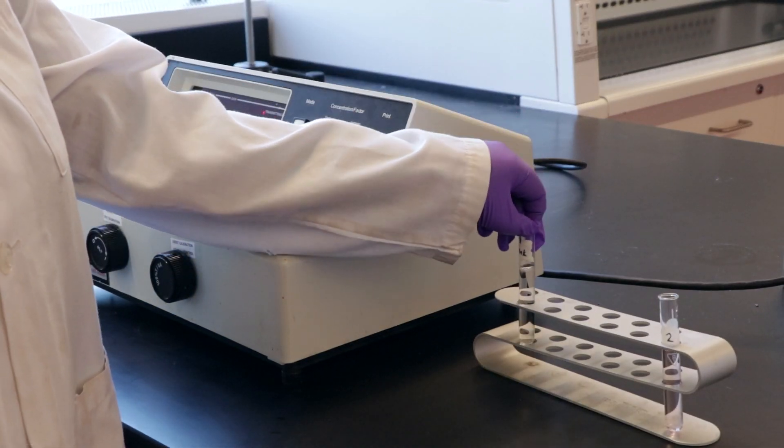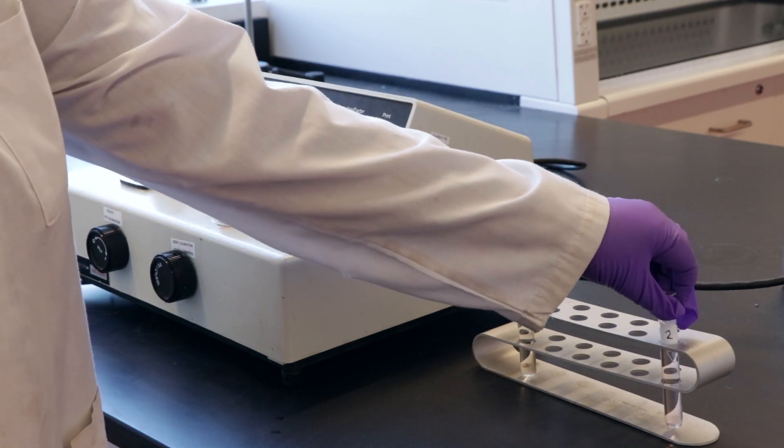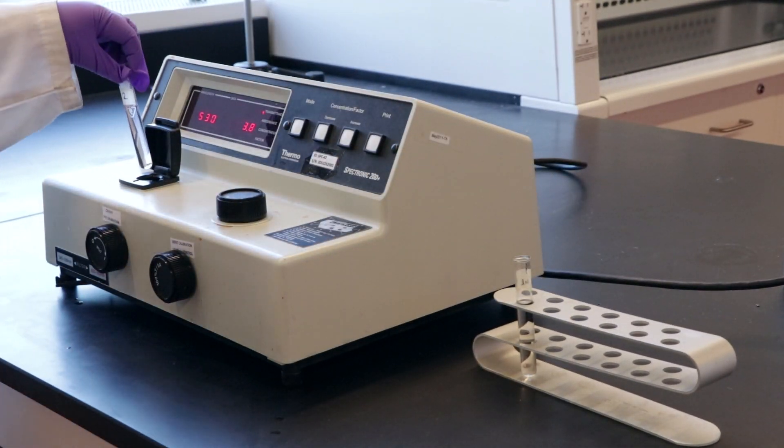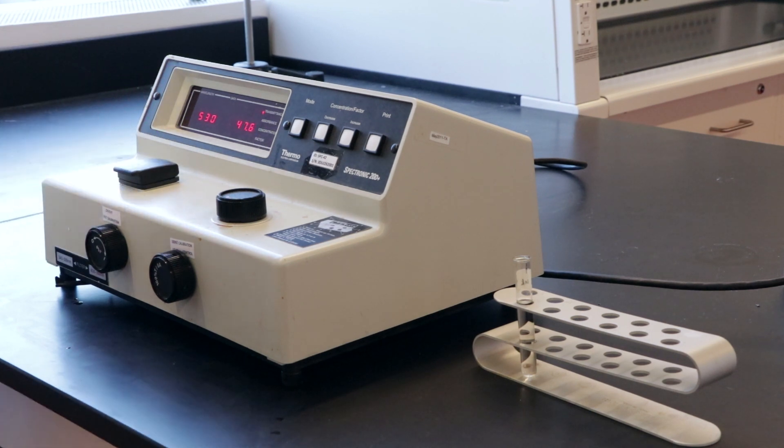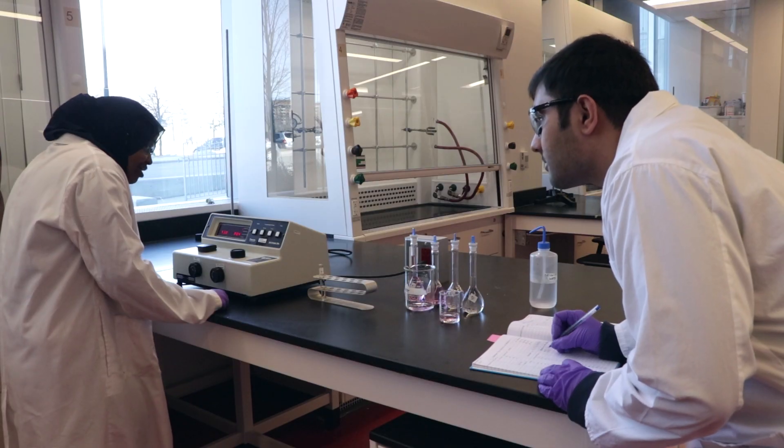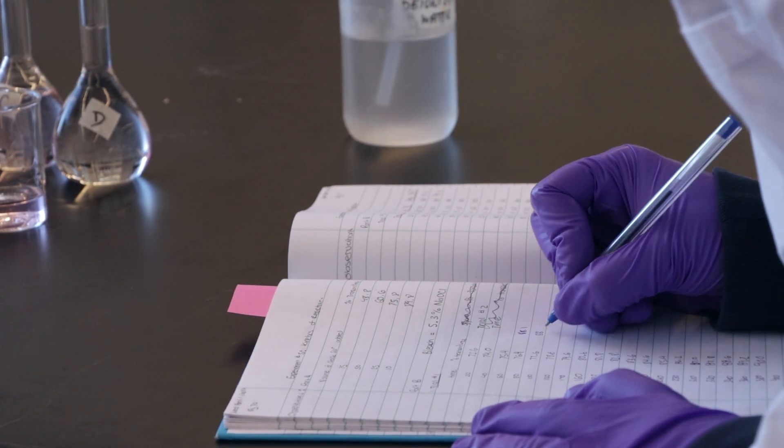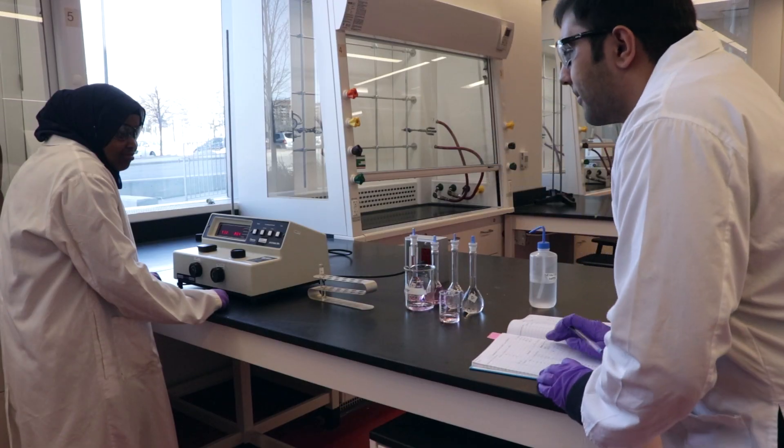Replace the blank with the cuvette filled with your solution. Record the percent transmittance. Once done, repeat the rinsing and measurement procedure for the next three solutions. Remember to place the cuvette in the same orientation as the first sample to prevent variation in the light path.